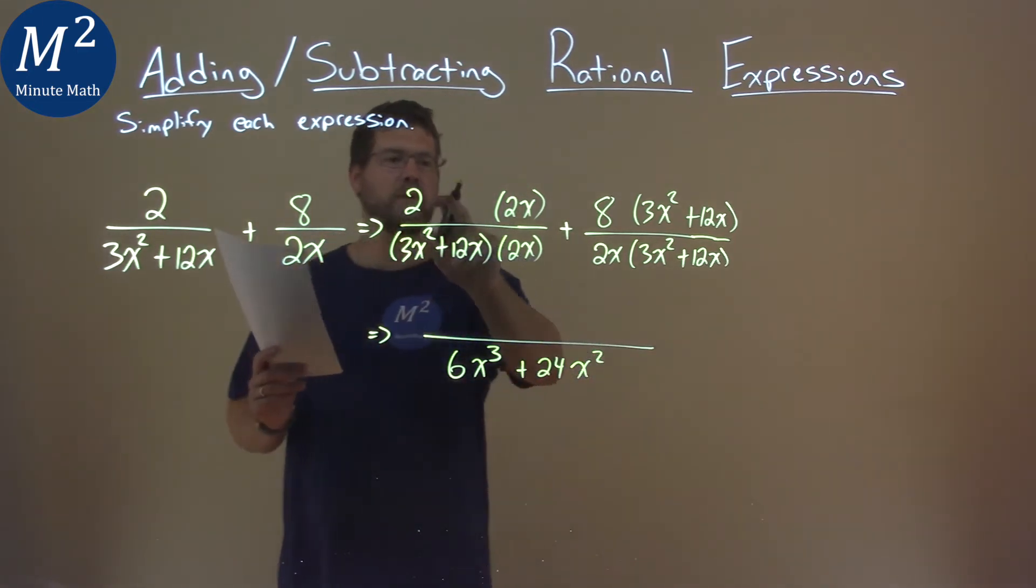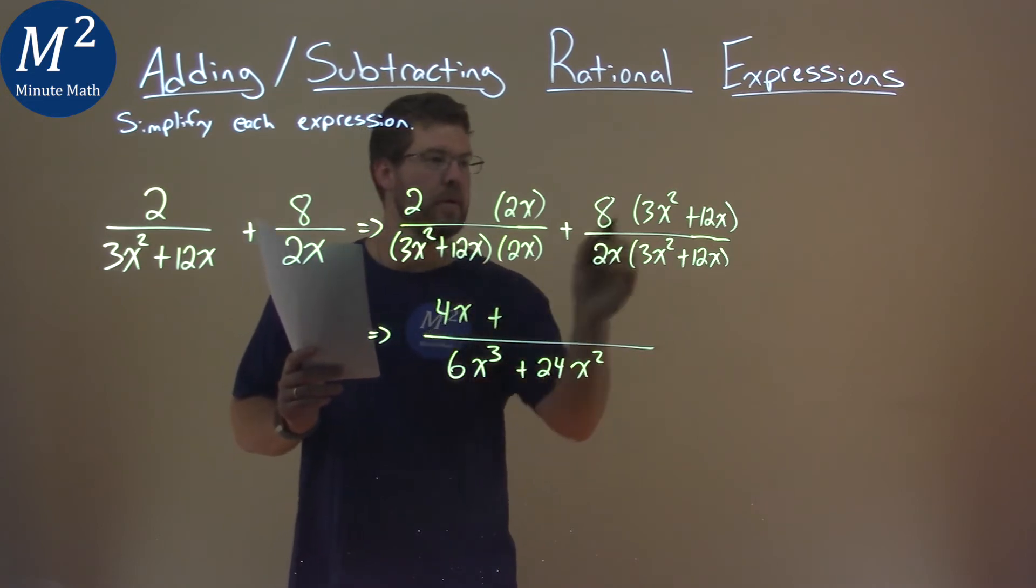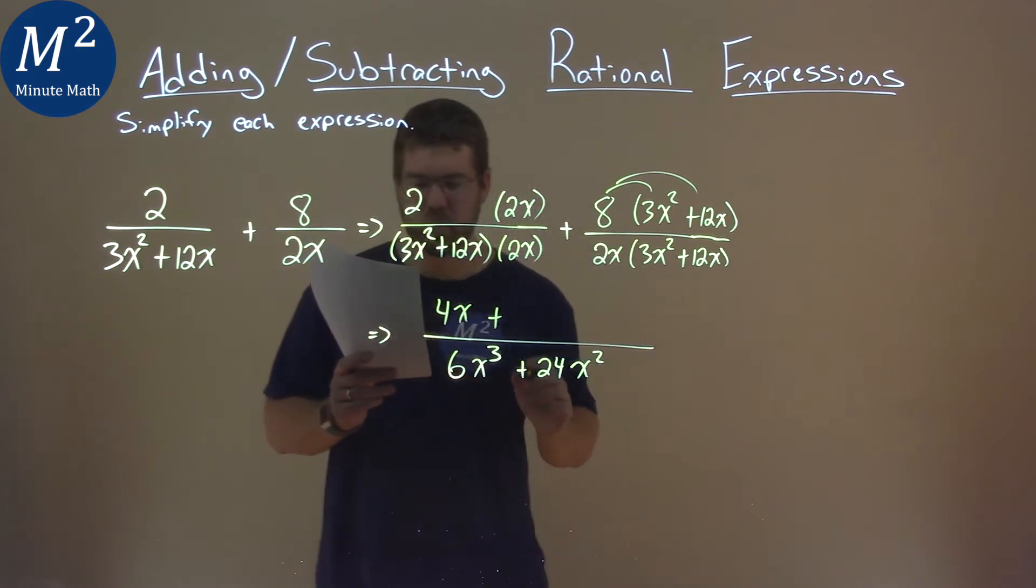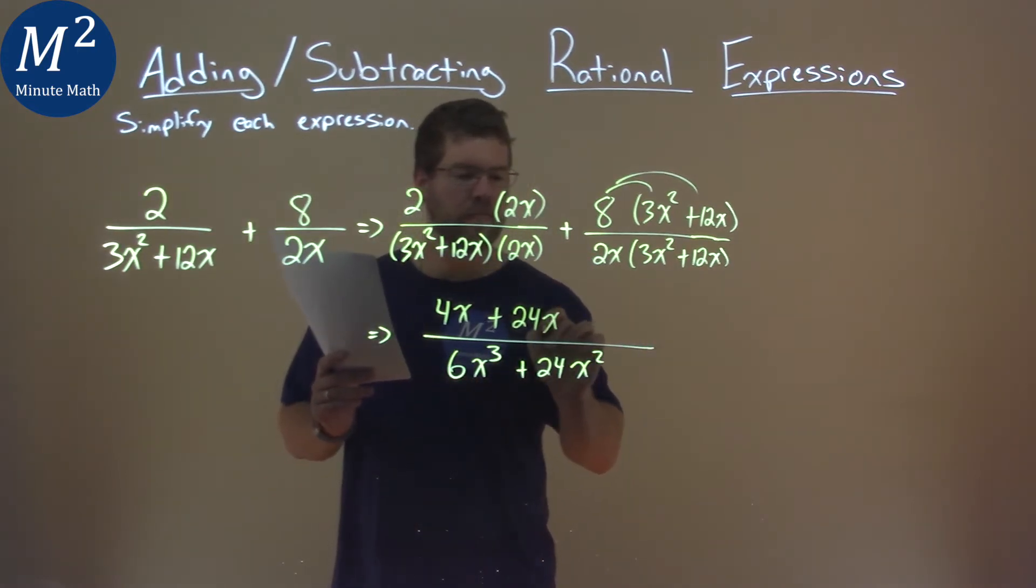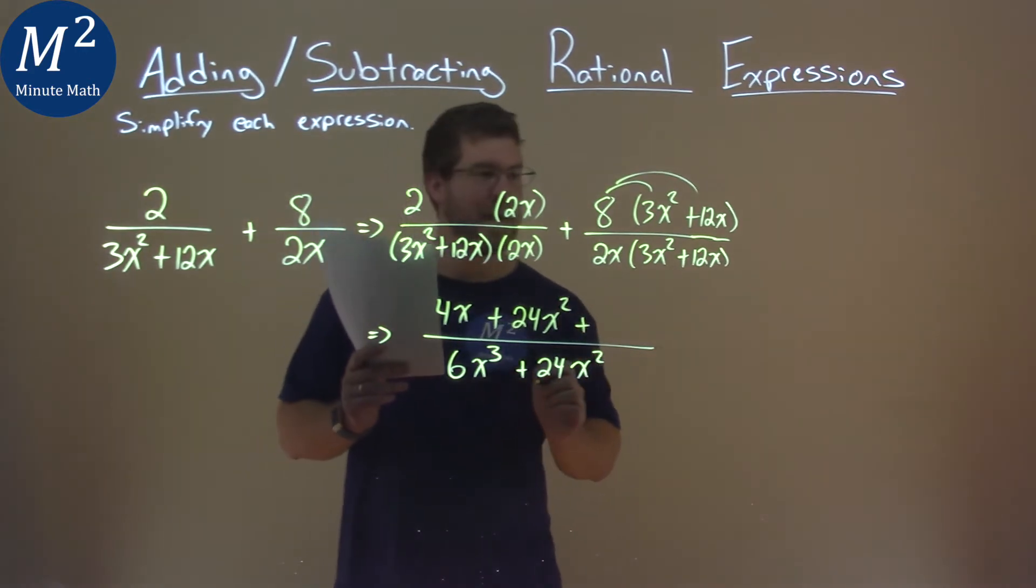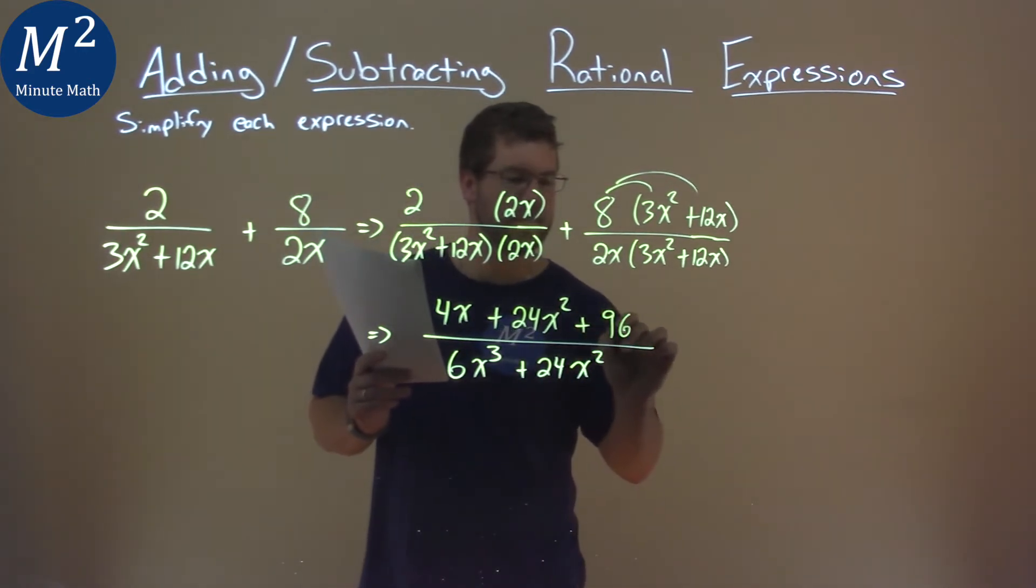The numerator, we multiply that out as we combine it. 2 times 2x is 4x. And then we multiply the 8 to both parts here. 8 times 3x squared is 24x squared, and 8 times 12x is 96x.